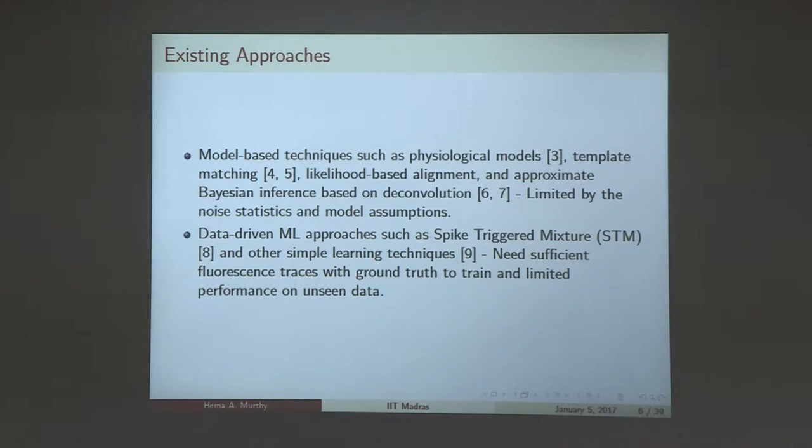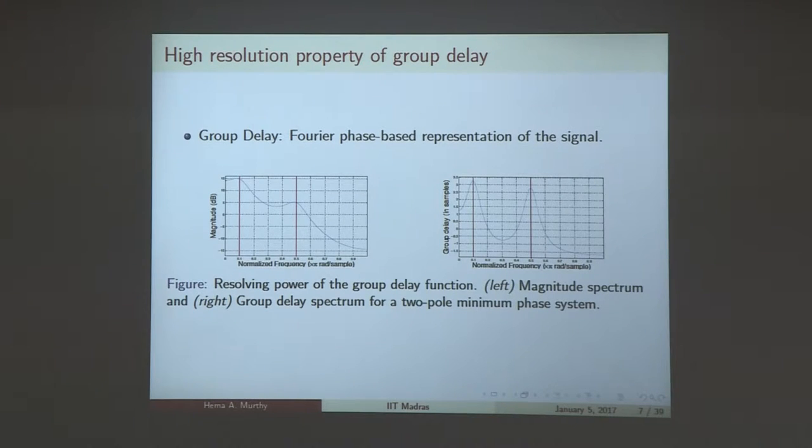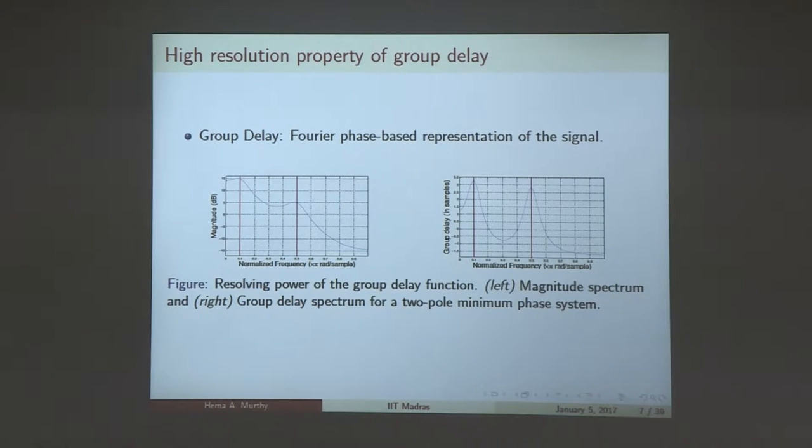There are a number of existing techniques: model-based techniques, which are physiological models, template matching, Bayesian inference, deconvolution. The primary limitation that we found in these techniques was that they were limited by the noise statistics and they had some model assumptions. Data-driven machine learning approaches like spike-triggered mixture and other simple learning techniques need sufficient fluorescence traces with ground truth data to train, and their performance is limited when you present them with unseen data. What did we do? We have been experts in a technique called group delay processing of signals in general. Group delay is nothing but the negative derivative of the Fourier transform phase. It has higher resolution and is a completely non-model-based technique.